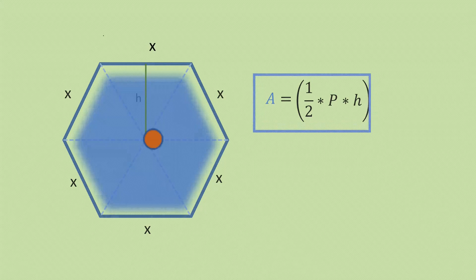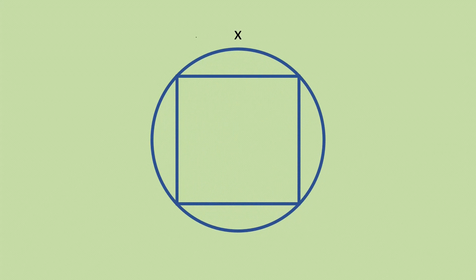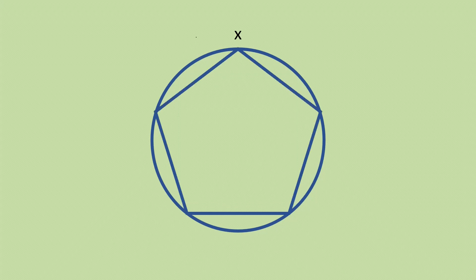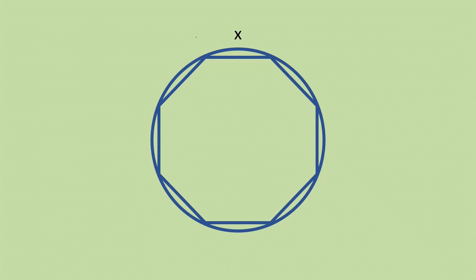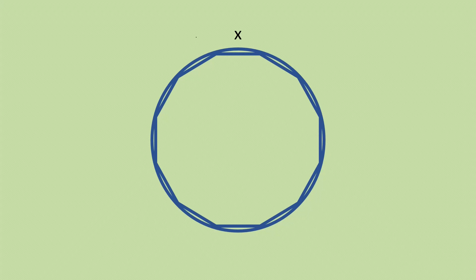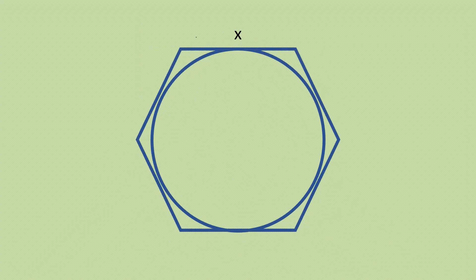The second lemma is the method of exhaustion. This is a technique that can be used to approximate the area of a circle by using regular polygons. We do this by simply increasing the number of sides of the polygon. As the number of sides increases, the area of the polygon gets closer to the area of the circle. We can create these polygons by either inscribing them inside the circle or circumscribing them around the circle.